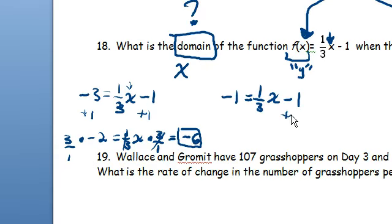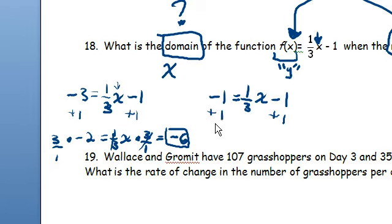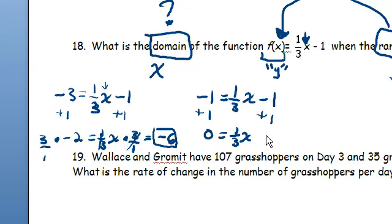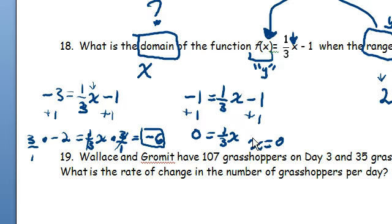Okay, I'll add 1 on that side, add 1 on that side. That gives me 0 equals 1/3 x. Well, anything times 0 is 0. So 1/3 times 0 is 0. So in this instance, x must be equal to 0.